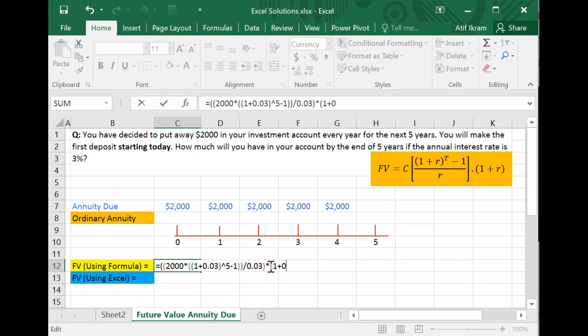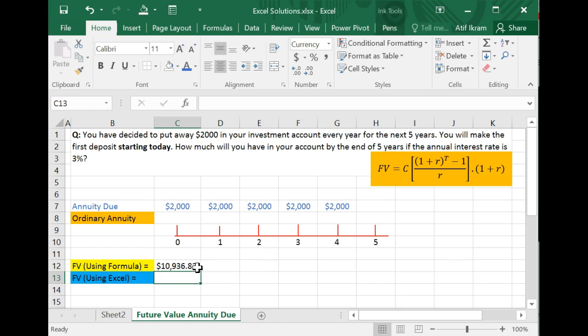Good Lord, right? You make one mistake here and you're done and you have to do it all over again. But hopefully we haven't made any mistakes here. So when you implement this formula, this basically tells you that at the end of five years, you'll have about $10,936.82.